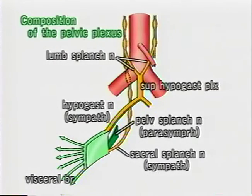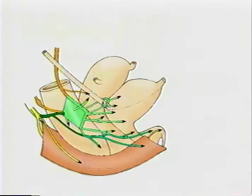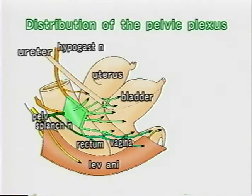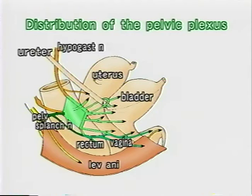The pelvic plexus consists of sympathetic nerves which descend from the lumbar sympathetic trunks and parasympathetic components which originate from the sacral plexus. From the pelvic plexus, branches are distributed to the rectum, uterus, vagina, lowermost ureter, bladder, and urethra, and also to the dorsum of the clitoris. Some independent branches do not run via the pelvic plexus.